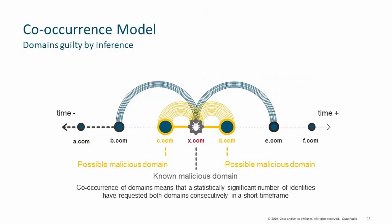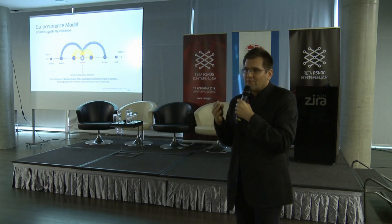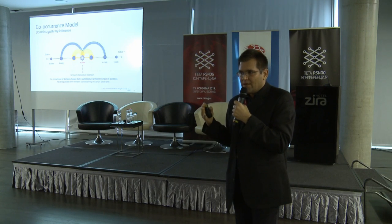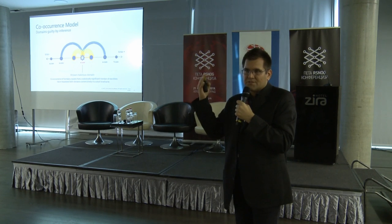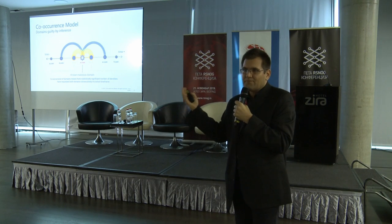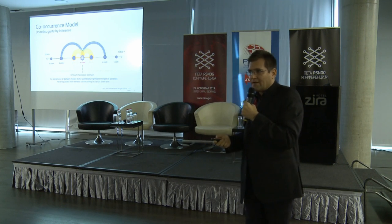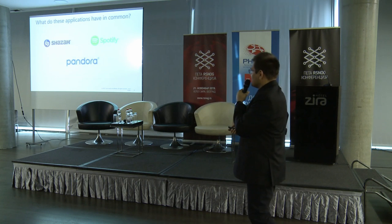One of the algorithms is the co-occurrence model. Co-occurrence checks the connection between the domains you are visiting. For example, if X is a malicious domain and you are also visiting domains C and D within a relatively short timeframe, there is a higher chance that these domains are connected to the same malware campaign - making them more than potentially malicious.